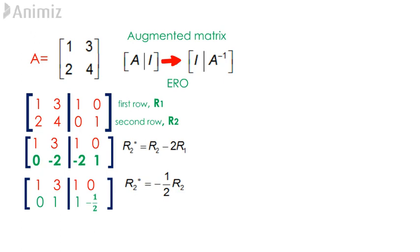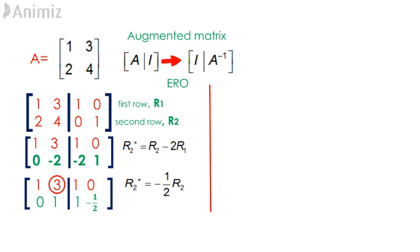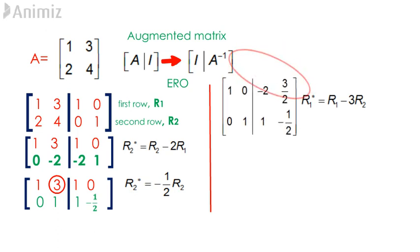As we can see, the elements in our leading diagonal have been changed to 1, leaving us with the 1,2th element to be changed. In order to get our new row 1, multiply 3 by the old row 2 and minus it from the old row 1. This gives us the elements of our new row 1 to be 1, 0, negative 2, 3 over 2.